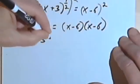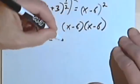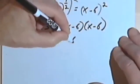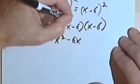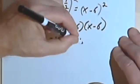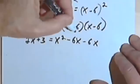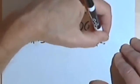So let's see what we get. 2x plus 3 equals x times x is x squared, x times negative 6 is negative 6x, then I've got a negative 6 times x, which is another negative 6x, and I've got negative 6 times negative 6, which is positive 36.